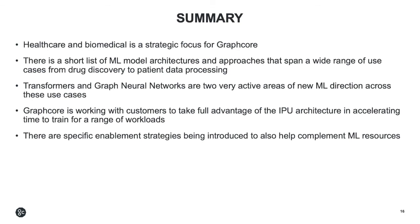I'd like to take a minute to summarize a few key points. Healthcare and the biomedical vertical market is a strategic focus for Graphcore. What we've been finding is that there's a short list of ML model architectures and approaches that span a wide range of use cases, all the way from drug discovery to patient data processing. Transformers and, following after them, graph neural networks are two very active areas of new ML direction across all of these use cases. Graphcore is working with customers to take full advantage of the IPU architecture in accelerating time to train and performance for this range of workloads. There are also specific enablement strategies being put in place to help complement ML resources already in place at customer sites. Thank you very much.